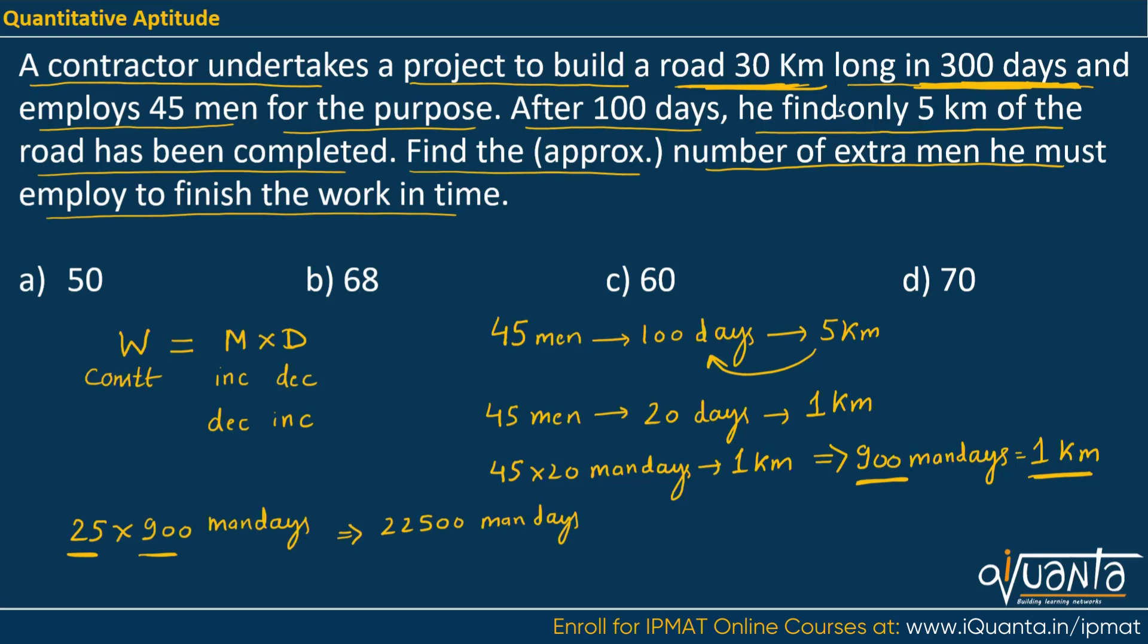Now this work has to be done in 200 days. So we will divide it by 200 days. That will give us the number of men employed. So days will cancel. We will get the number of men equal to 112.5 men. So earlier there were 45 men employed. Now there were 112.5 men employed. So what is the extra number of men employed? It will be 112.5 minus 45 which again gives me 67.5 which is approximately equal to option B.